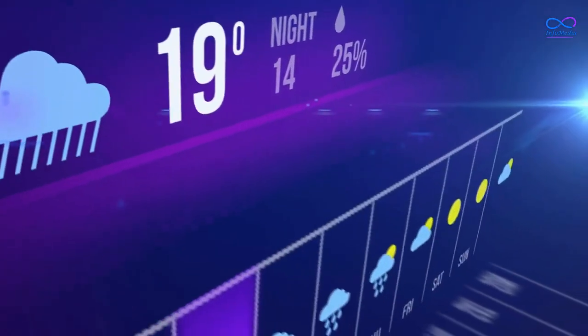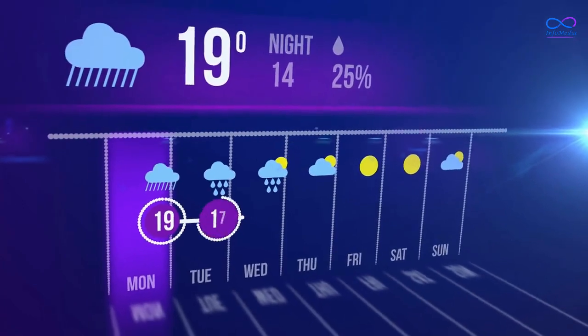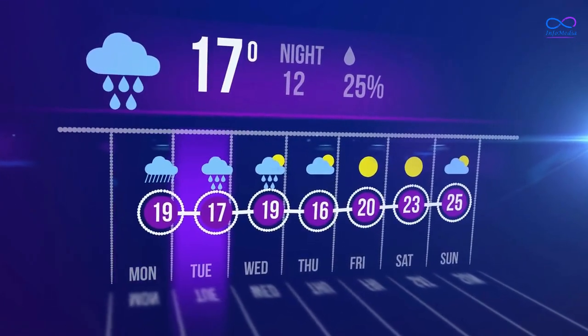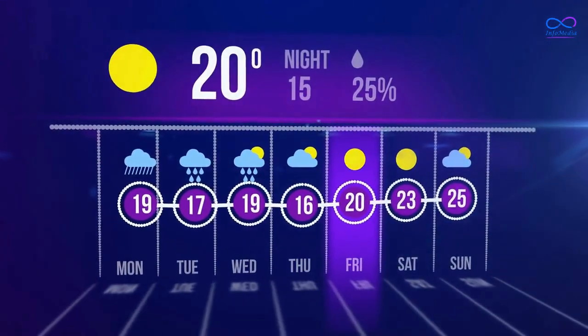In addition to its hot temperature, HD 189733 b is also subjected to extreme weather conditions. The planet's winds can reach speeds of up to 2 km per second, making it one of the windiest planets known.